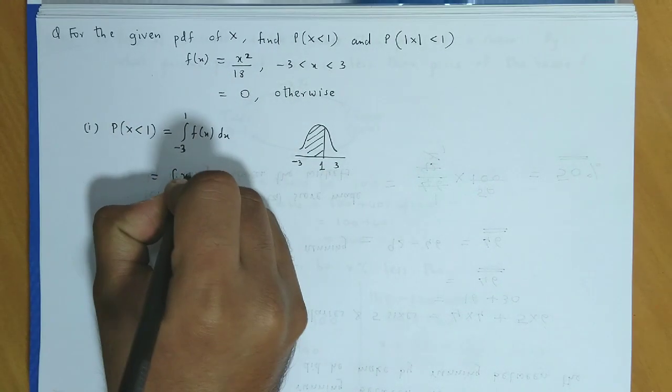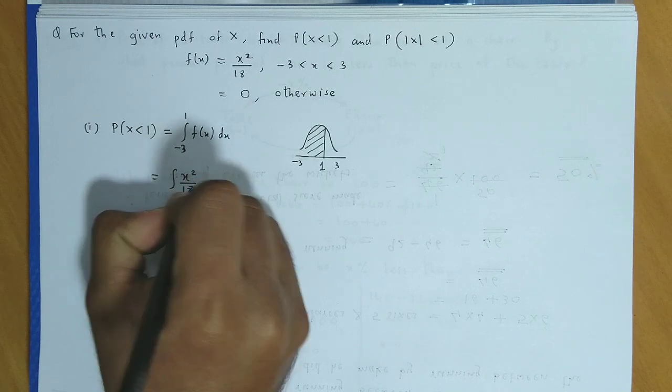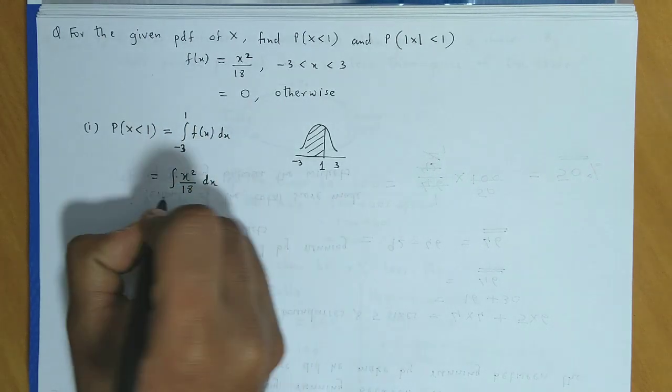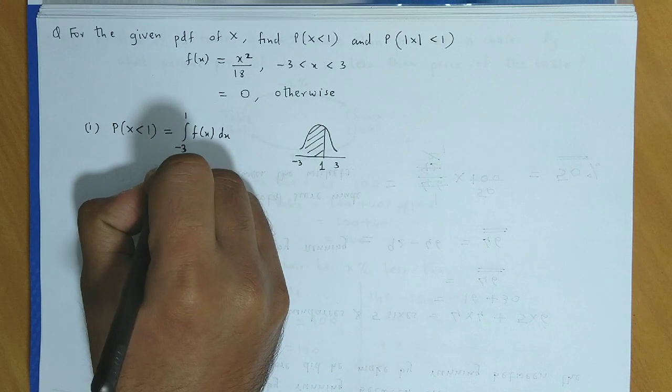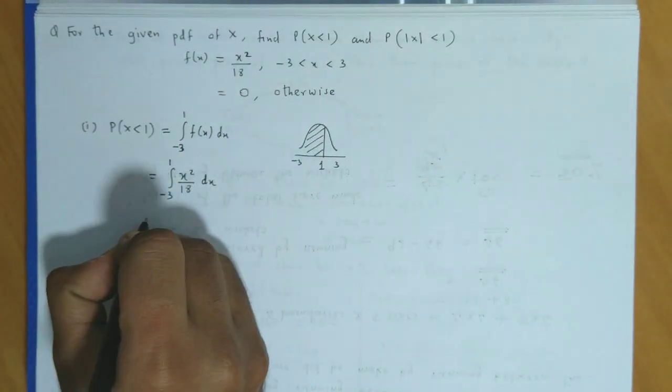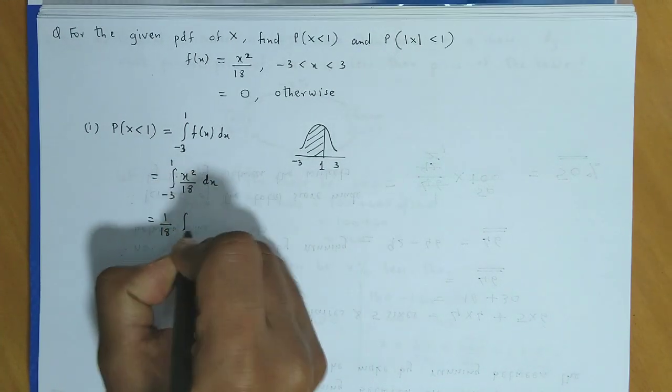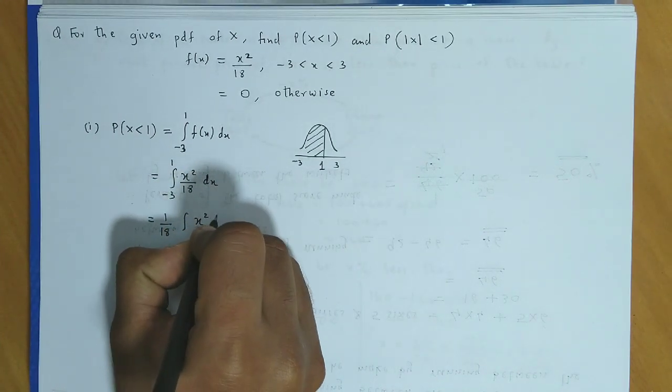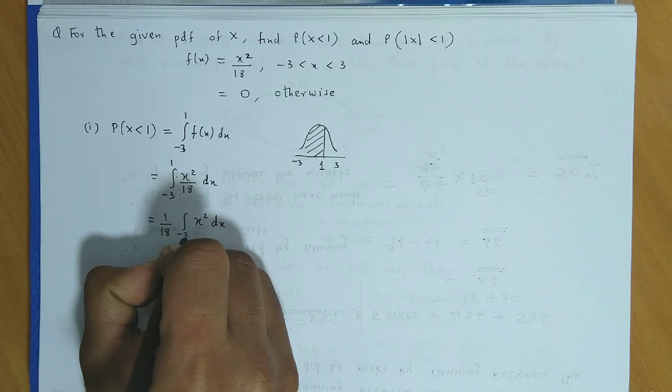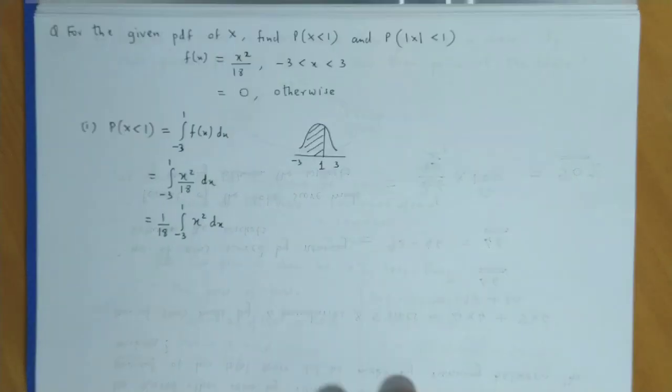Now f(x) is x² by 18. So we integrate x² by 18 dx from minus 3 to 1. We can factor out the constant 1 by 18, giving us the integration of x² dx from minus 3 to 1.